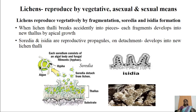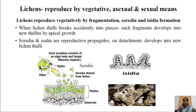The difference between soredia and isidia is that soredia have no cortical layer — they consist of only a single algal cell surrounded by a filament of fungal hyphae. Whereas isidia consist of more than 2 to 3, or around 10, algal cells along with fungal hyphae, and they are covered by a cortical layer of the main lichen thallus. Both soredia and isidia act as vegetative propagules which bring about reproduction in lichens.